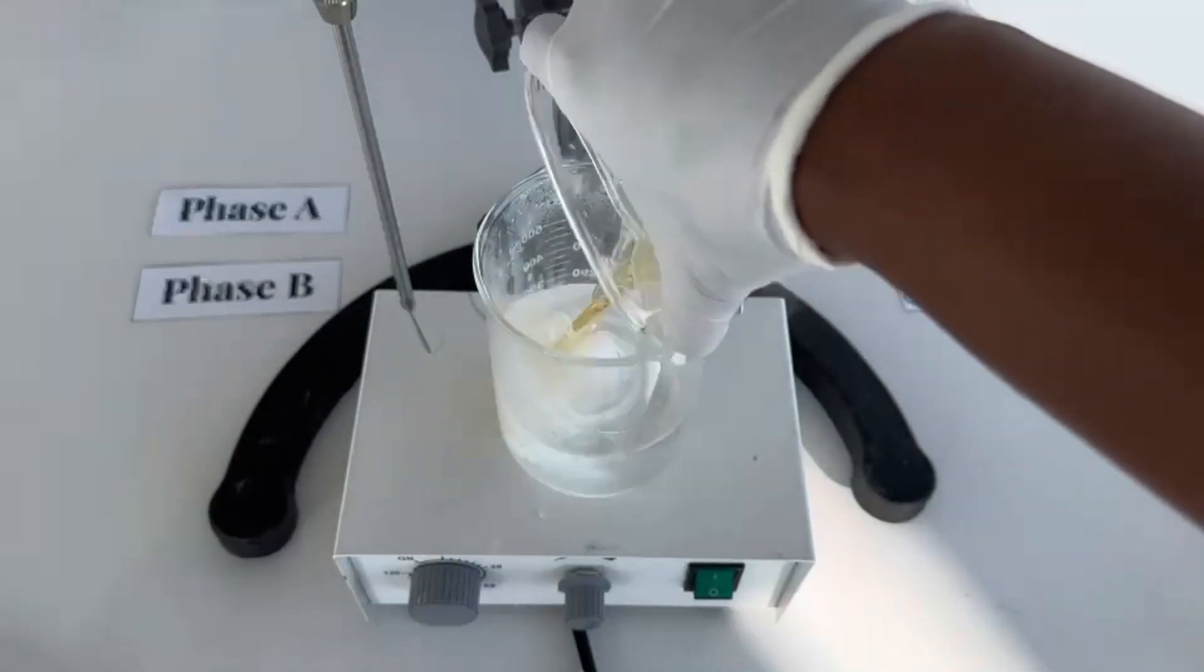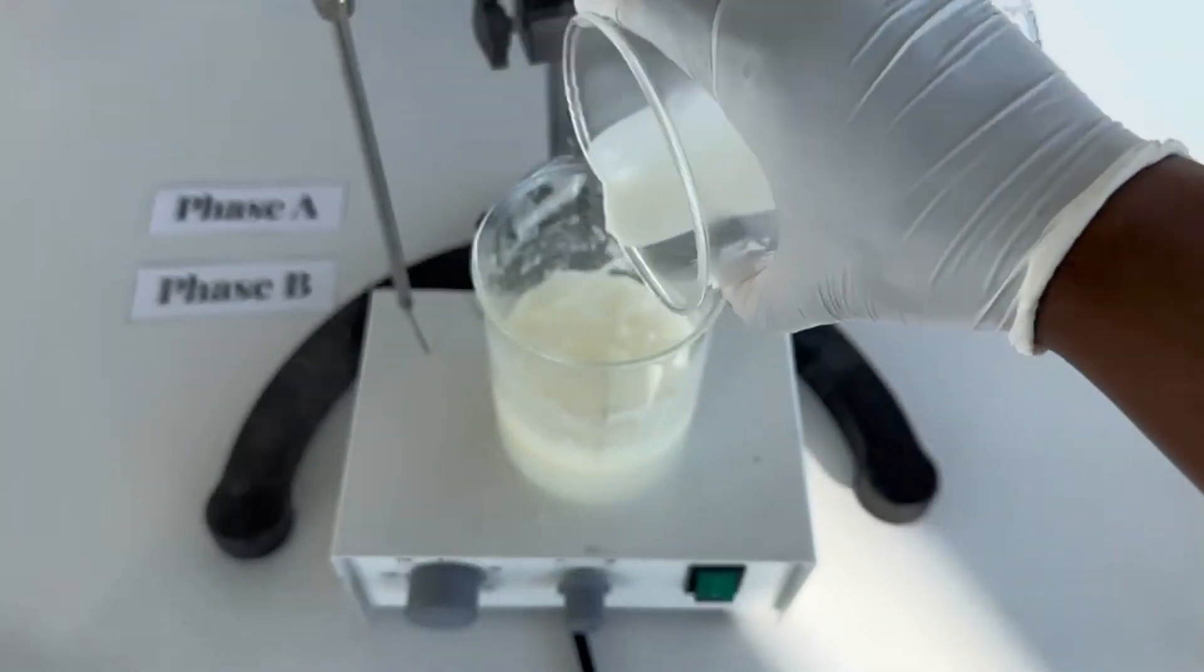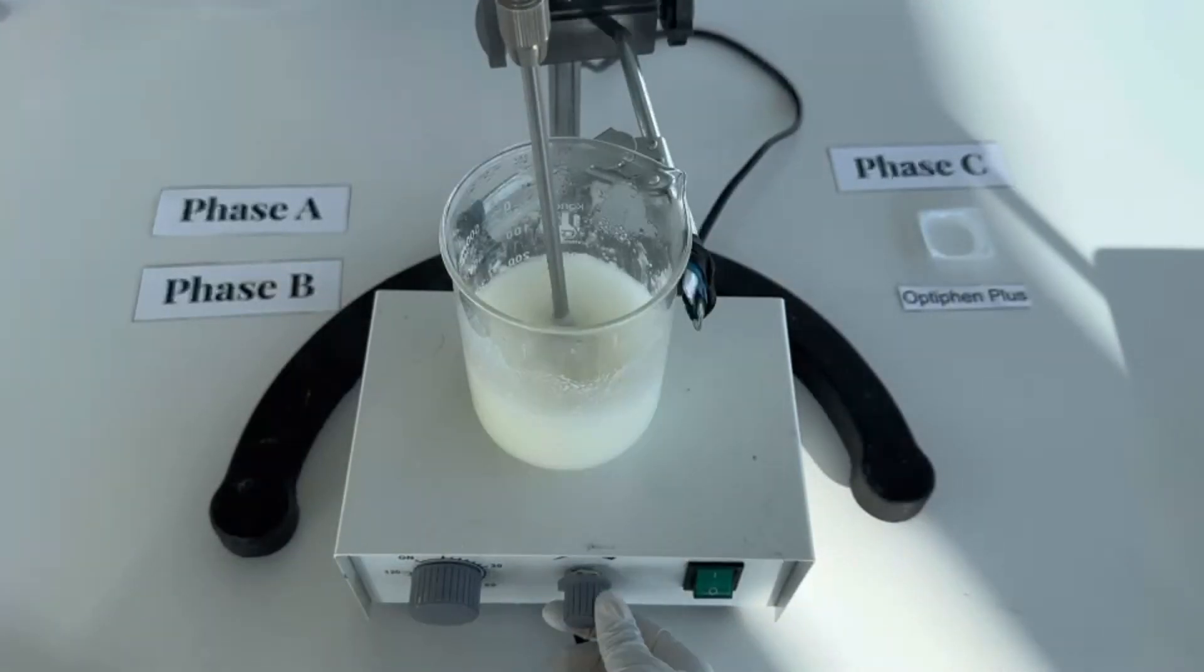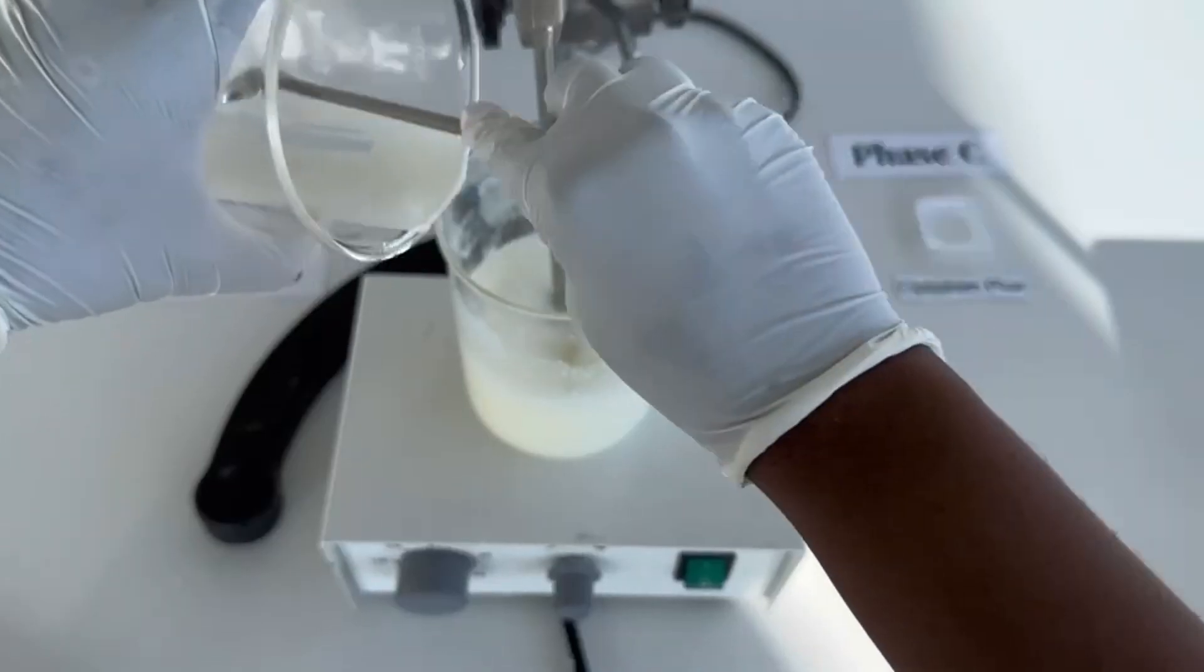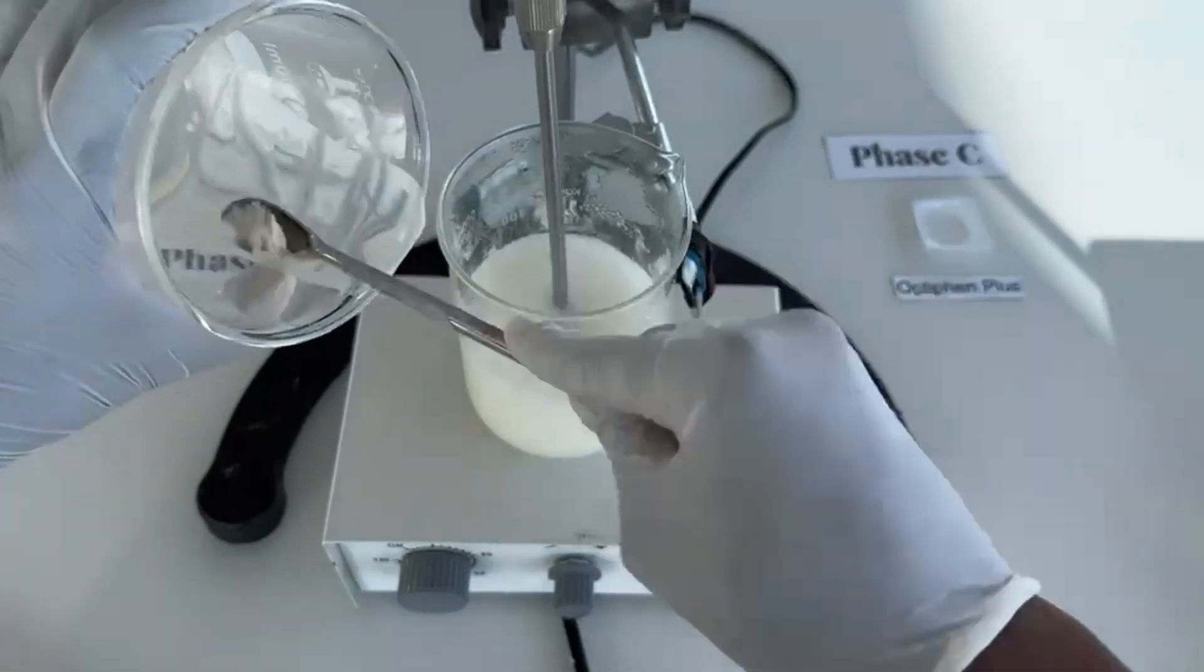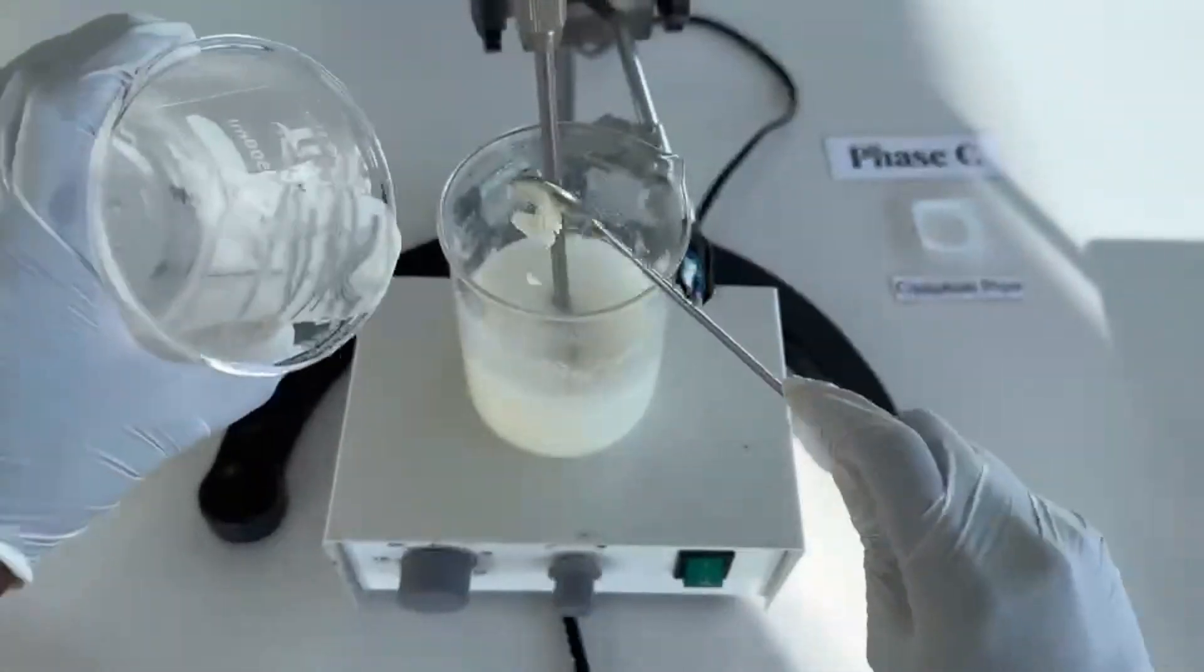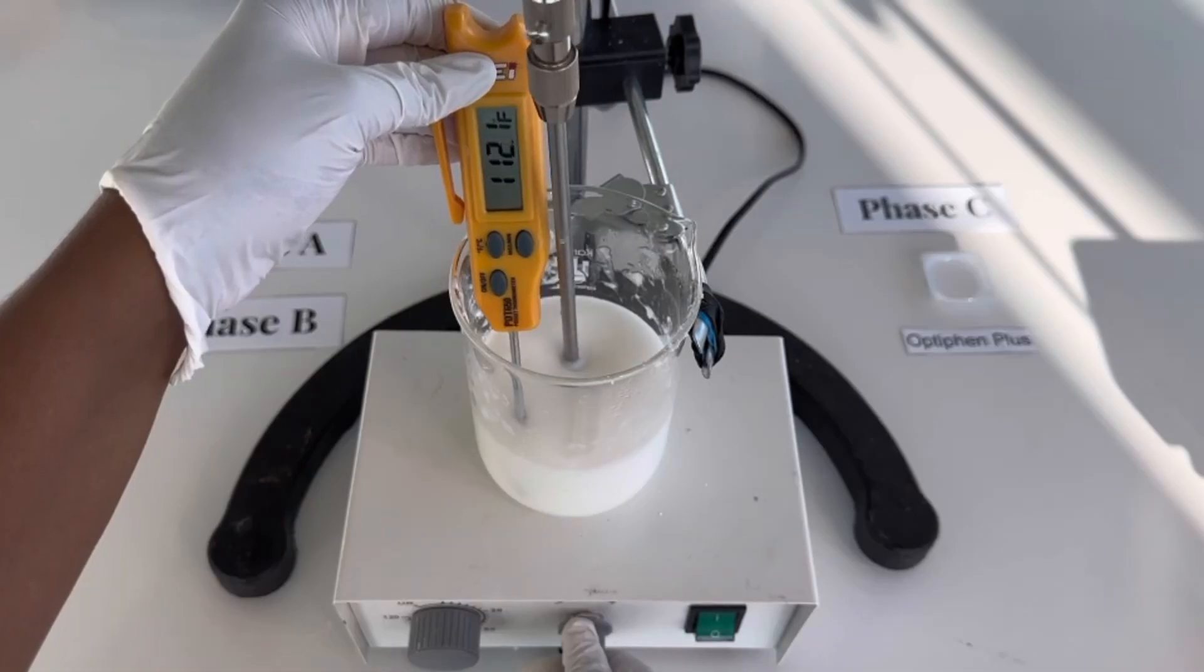Once Phase A is over 170 degrees and Phase B is completely melted, you then want to add Phase B to Phase A. Then blend these two phases using some form of mixer. I use an overhead lab stirrer so that it's hands free, but you can also use an immersion blender. Here I'm just trying to get as much of Phase B out of the beaker as I can.